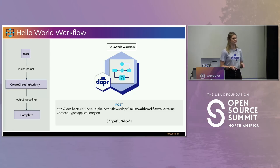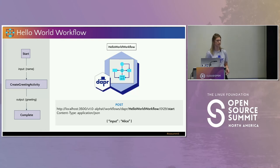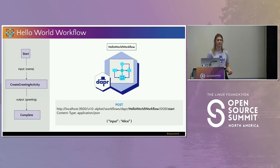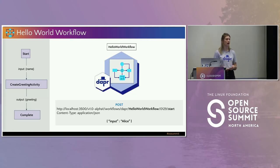We're going to jump right into a demo. I want to break down those core features into a simple demo that shows what it looks like from a code perspective. Today I'm using the .NET SDK to author my workflow with Dapr — that's what's supported today. Python is in progress coming this month, and we're working on Java, JavaScript, and extended capabilities. We have an application called the Hello World microservice that contains a Hello World workflow. The way to instantiate an instance of a workflow is by using the management APIs.